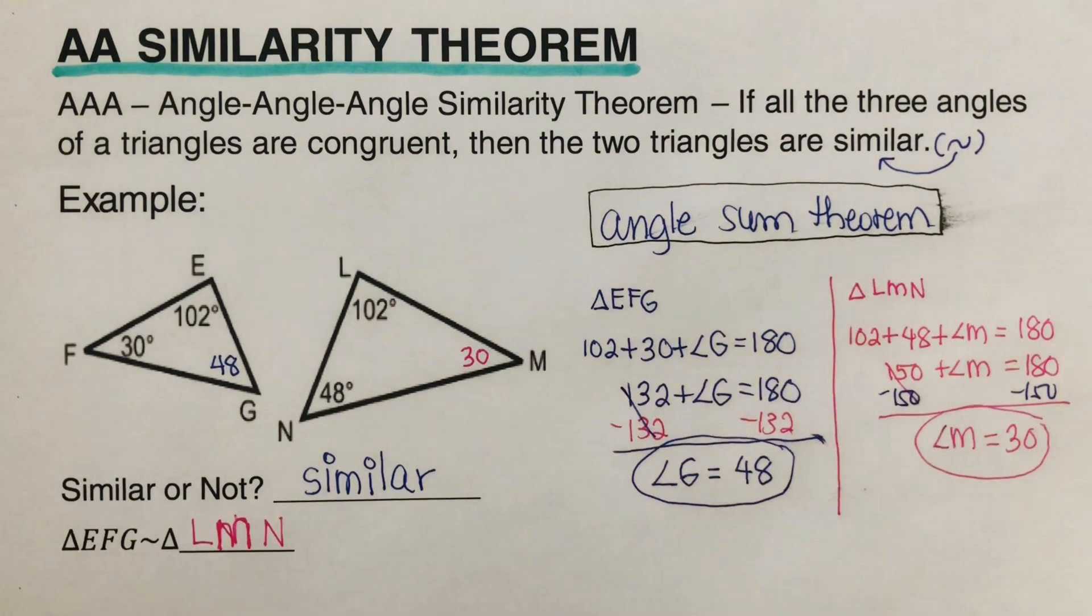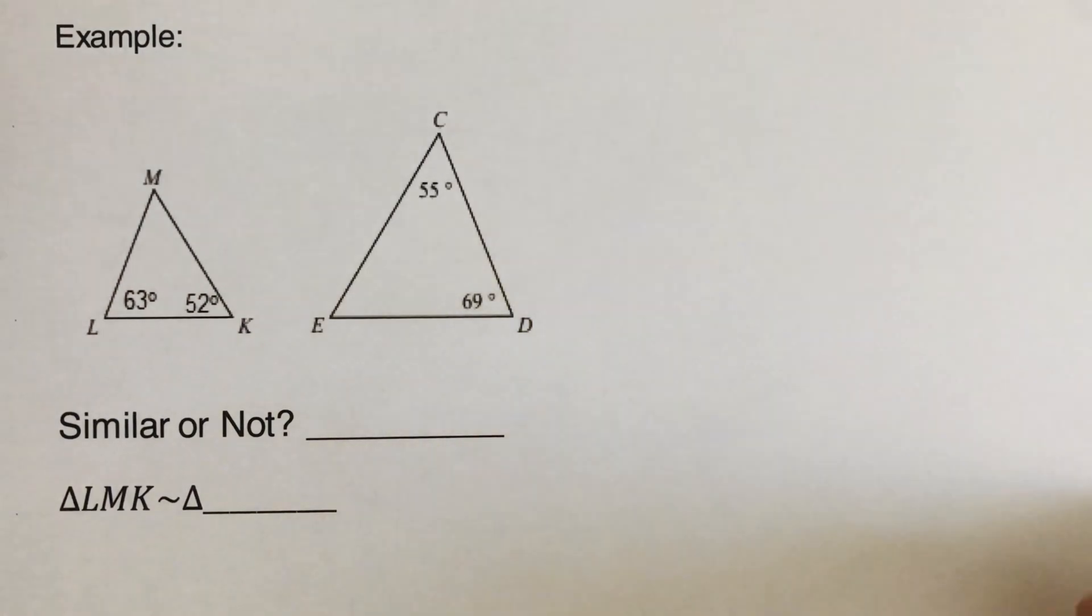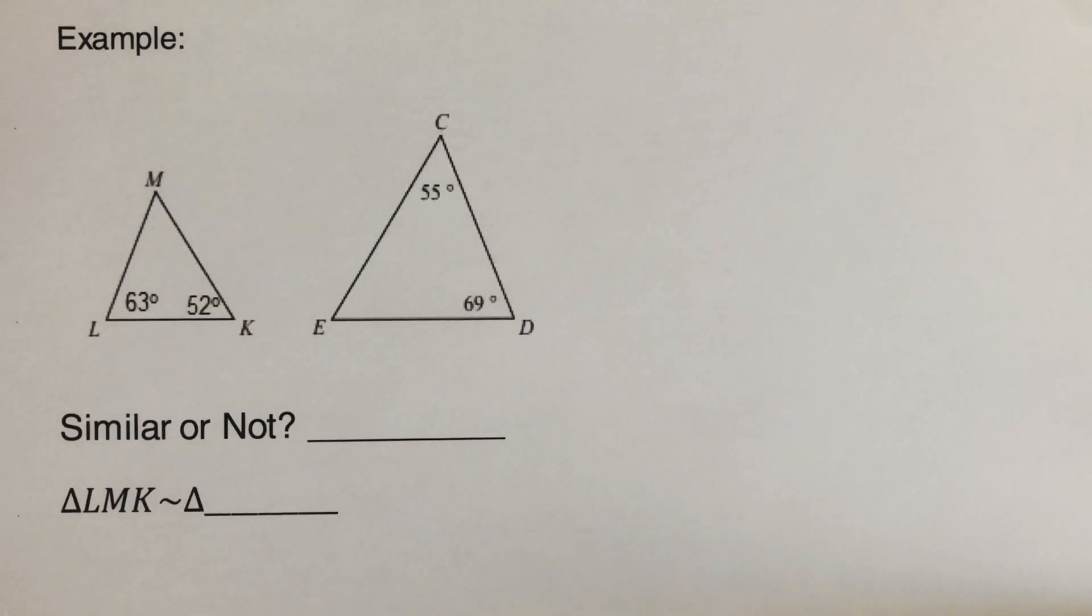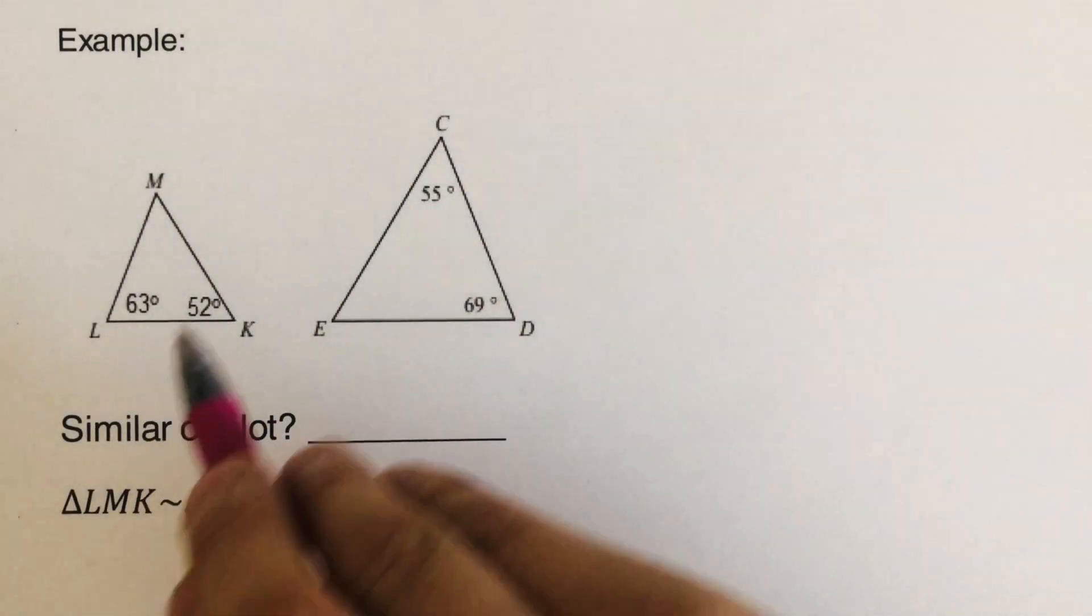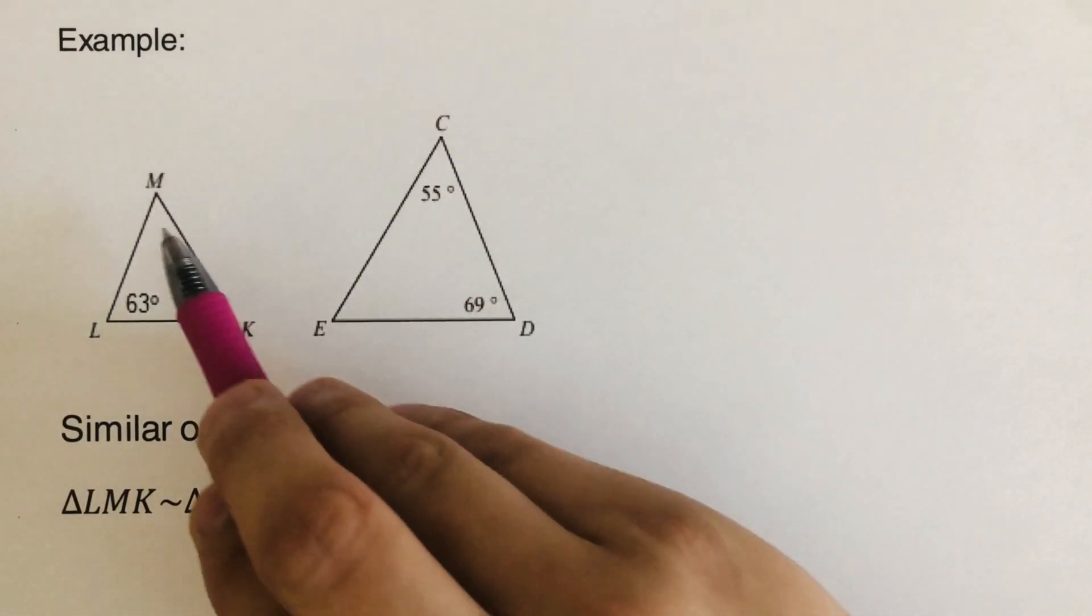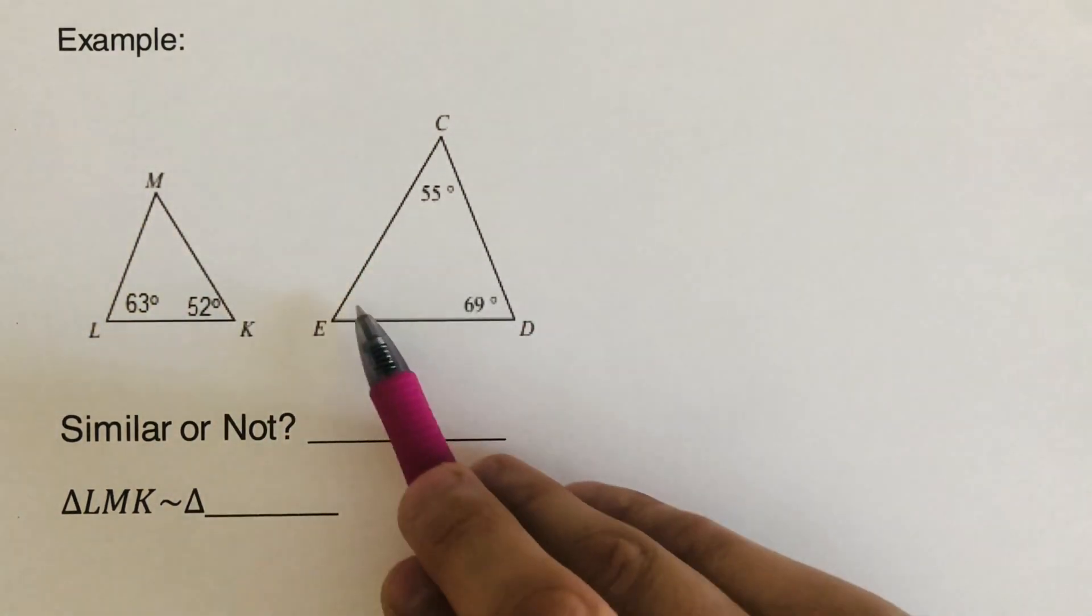At this time, I would encourage you to pause this video and try this problem out on your own. And when you're done, unpause it and check your answer. Okay, so we go over this. So let's find the measures for the missing angle here. So let's start with triangle.